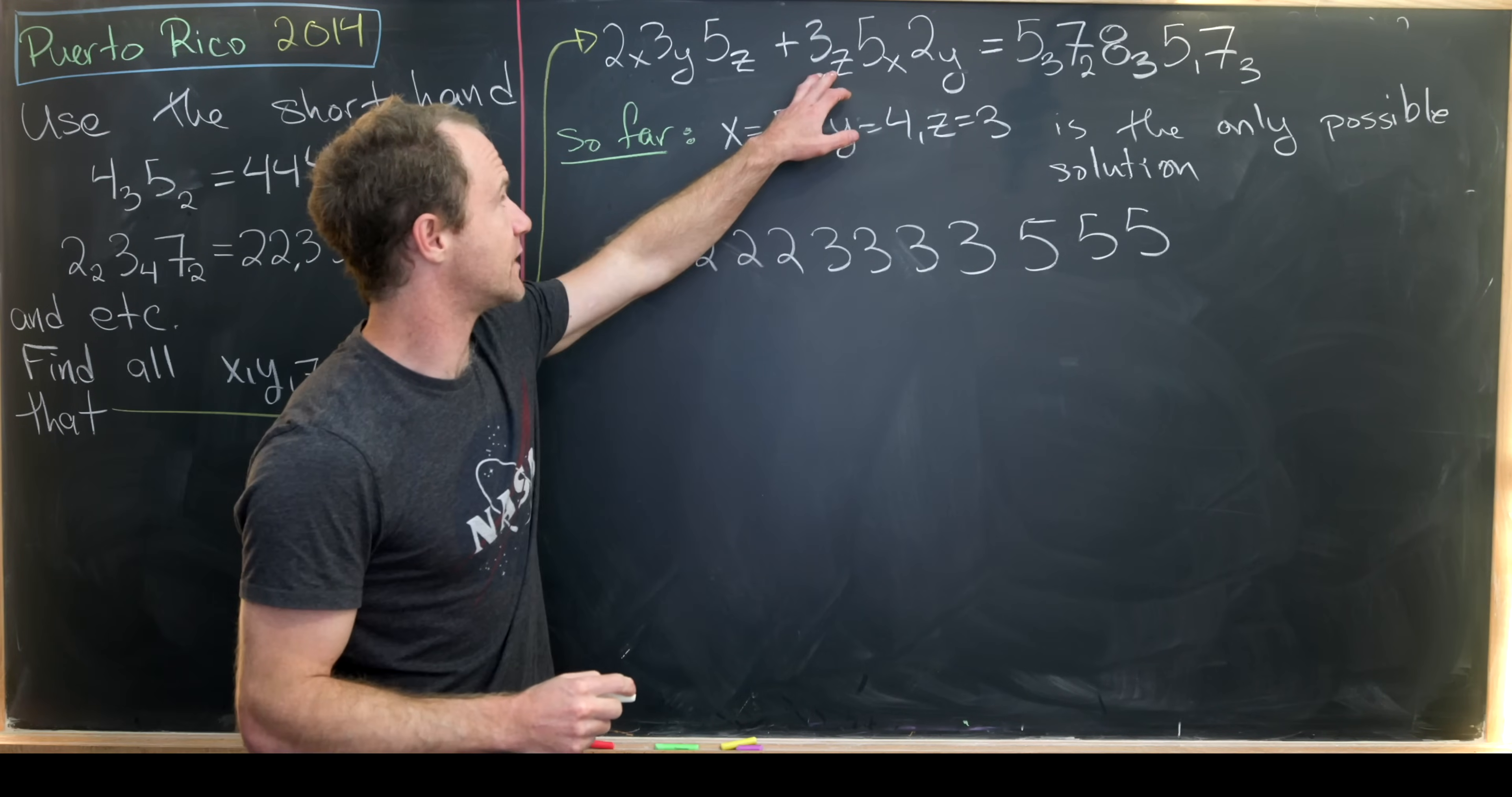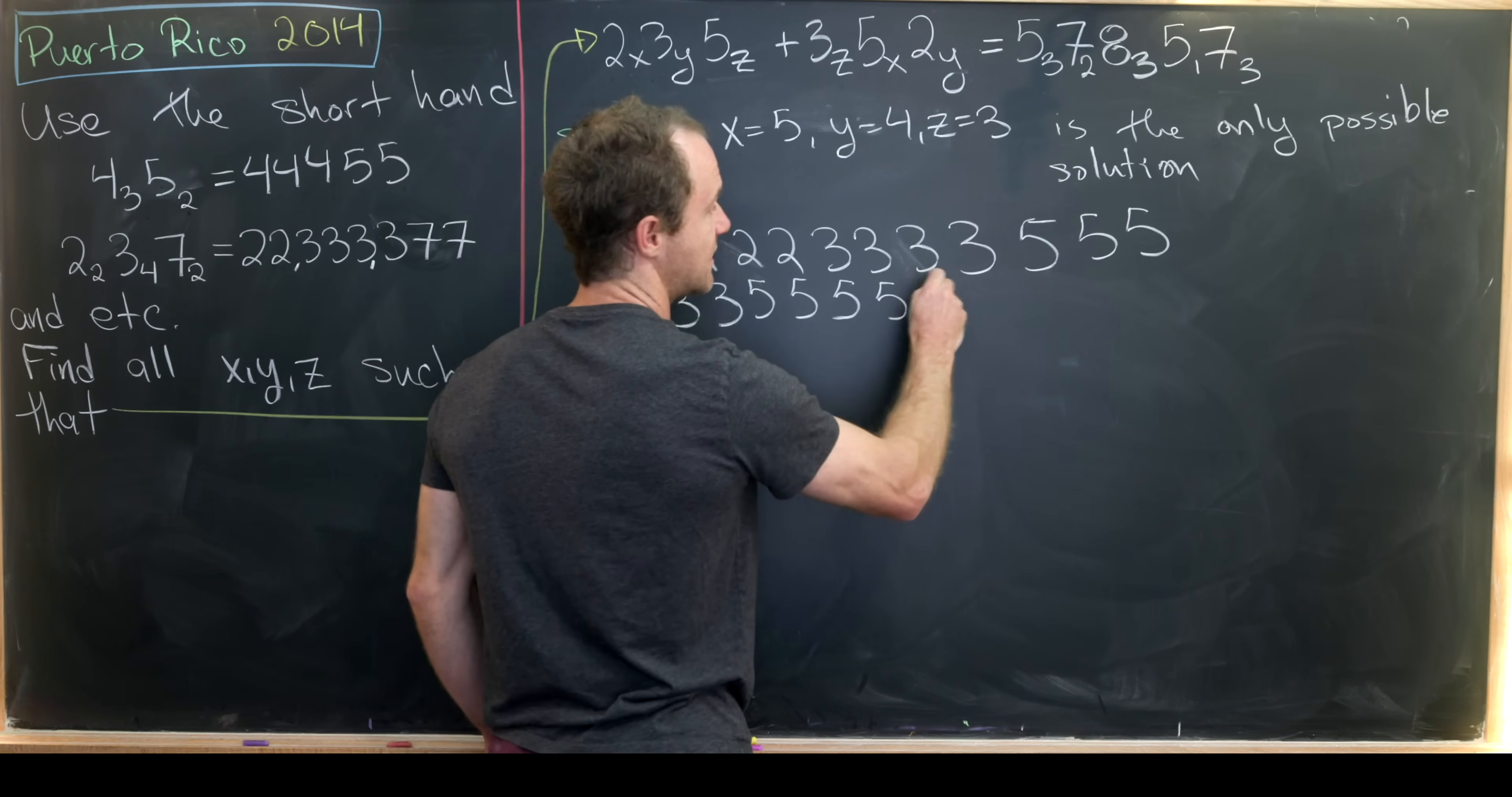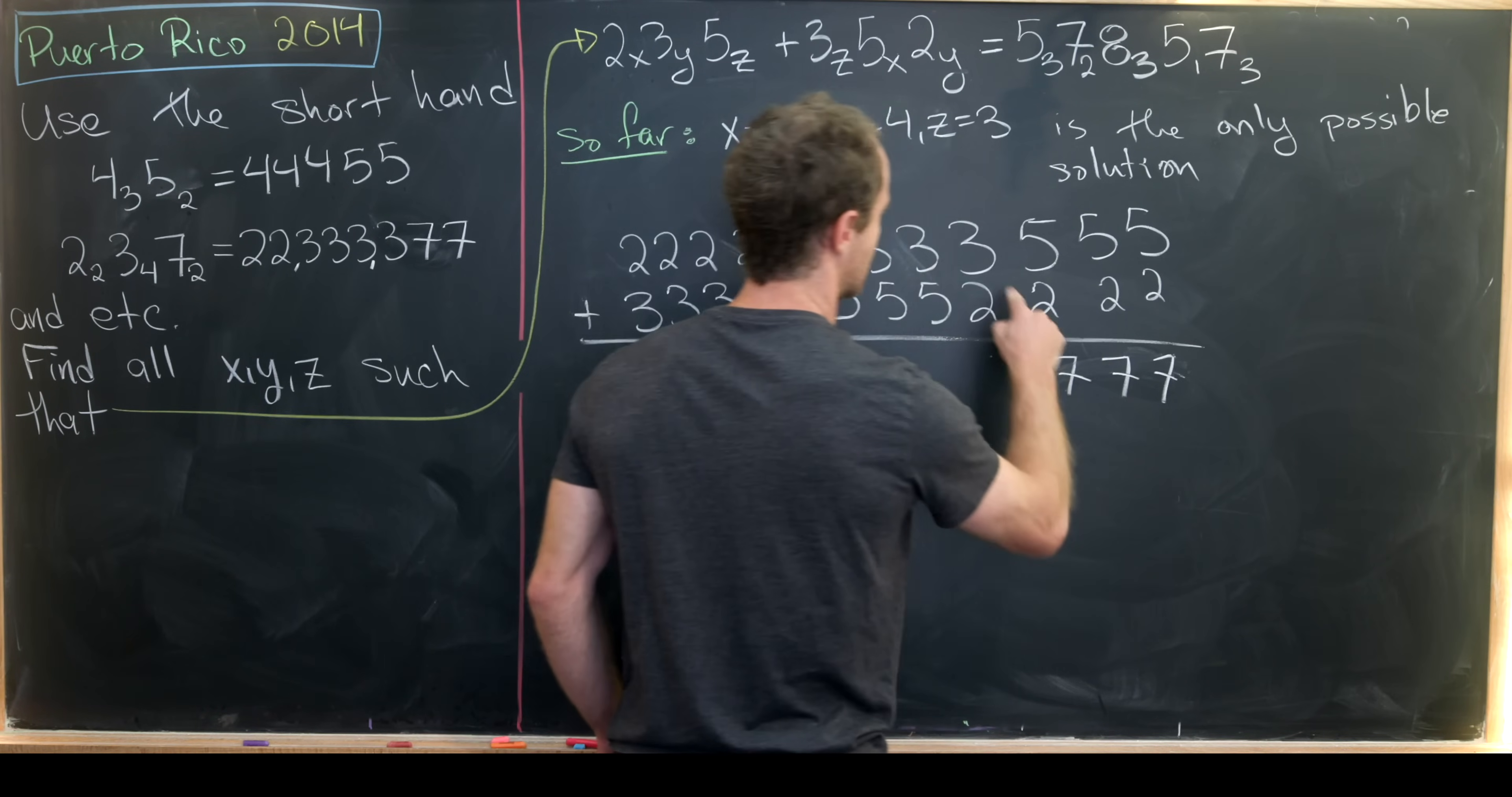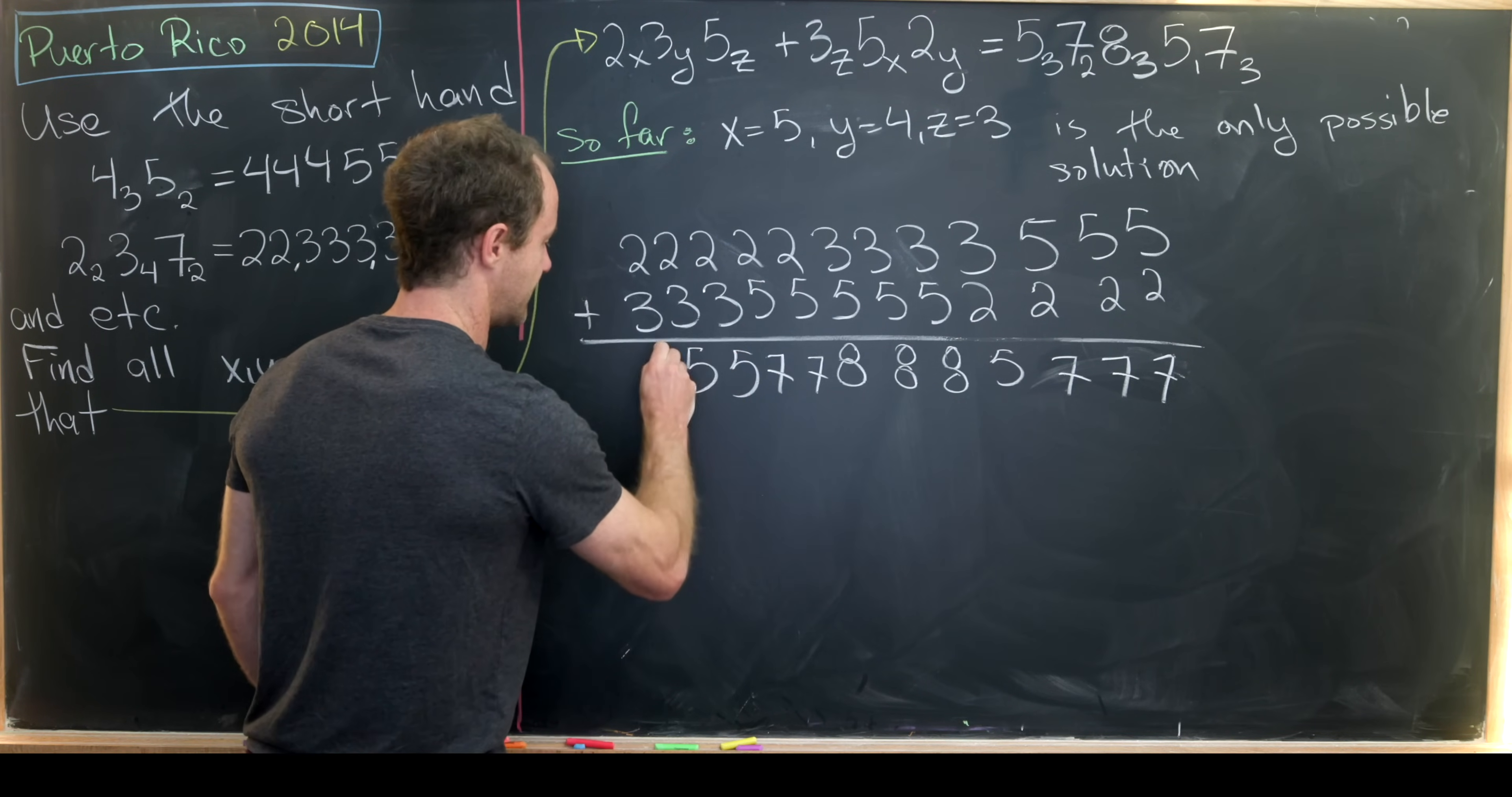If we have 3 sub z here that means we're going to have 3 threes: 333. And then we've got 5 sub x, so that's 5 fives: 55555. And then we've got 2 sub y, so that's going to be 4 twos. 5 plus 2 is 7, and we have 3 of those in a row. 3 plus 2 is 5. 3 plus 5 is 8, we've got some of those in a row as well. 2 plus 5 is 7 again. And then 3 plus 2 is 5.